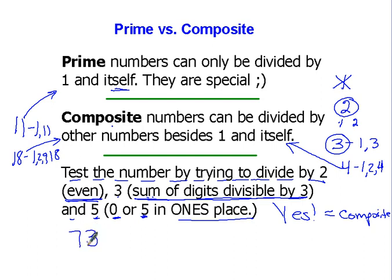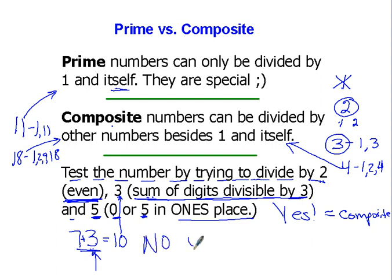Let's try the number seventy-three. Can we divide it by two? The digit in the ones place is three, so it's not even — it fails that test. Can we divide it by three? We add the digits: seven plus three equals ten. Can ten be divided by three? No, so we cannot divide seventy-three by three. Is it divisible by five? The ones place is three, not a zero or five — so it fails that test too. If a number fails all three tests, it's usually going to be a prime number.